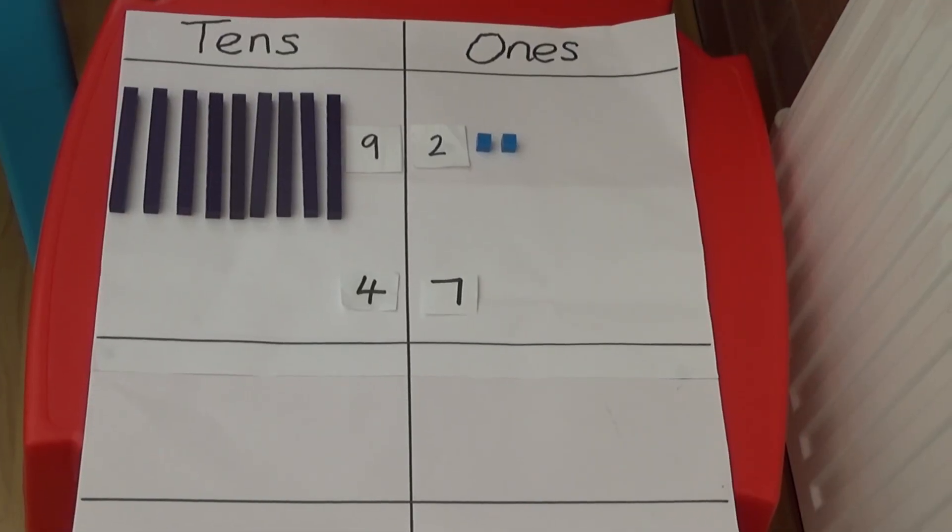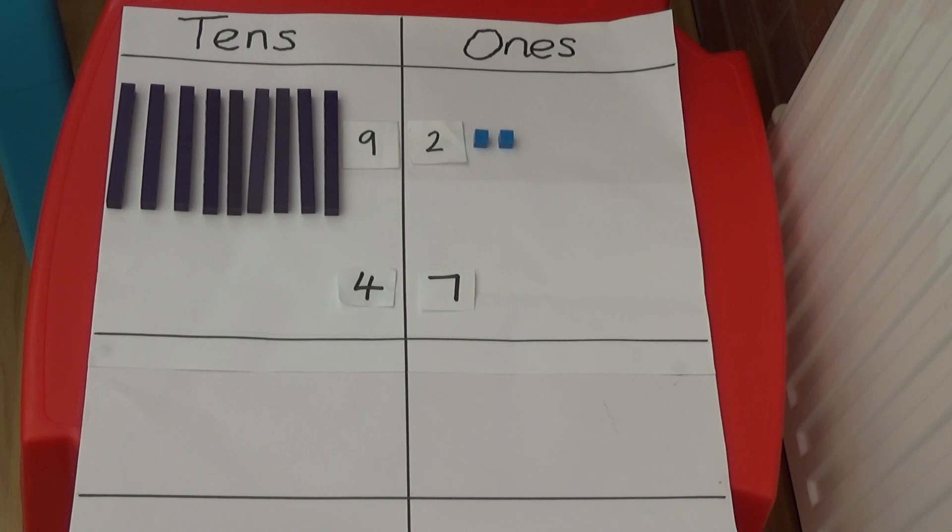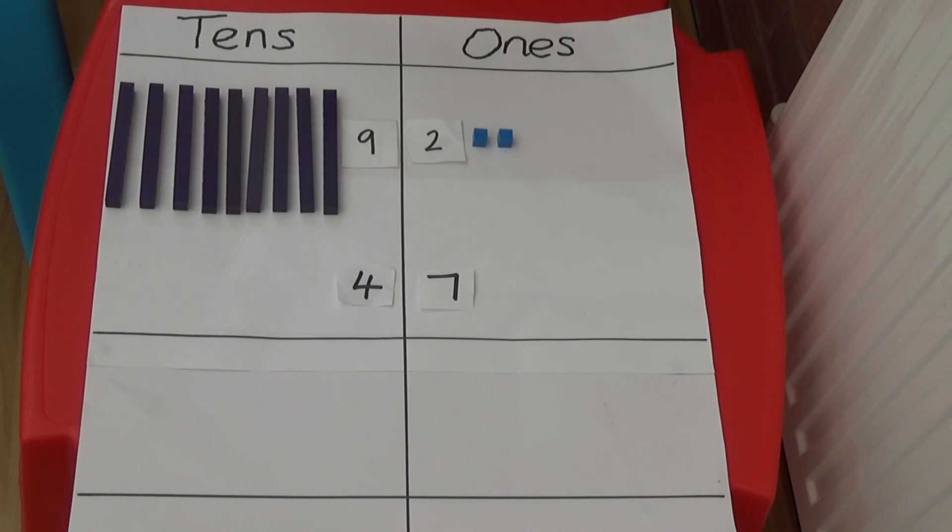We need to remember to subtract the ones first when we do column subtraction. First I need to work out 2 minus 7. This time there is a problem. I can't take 7 cubes away from the 2 cubes. I need to exchange one of my tens rods for 10 ones cubes and put them in the ones column.